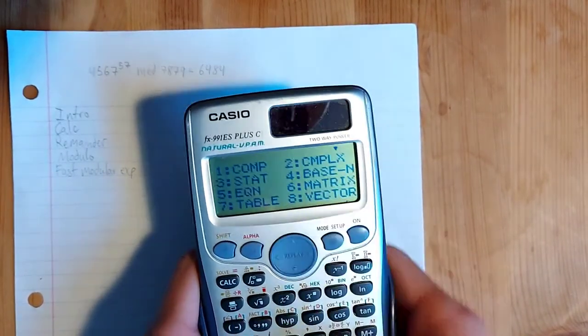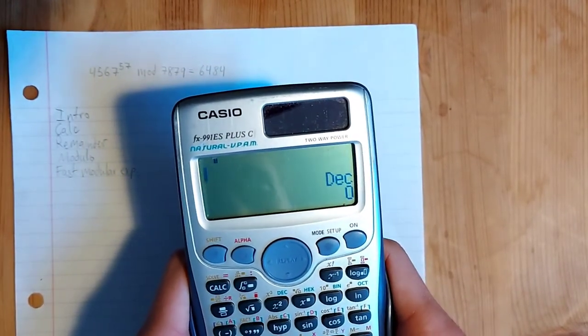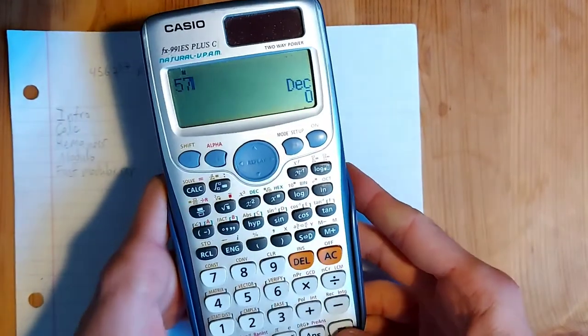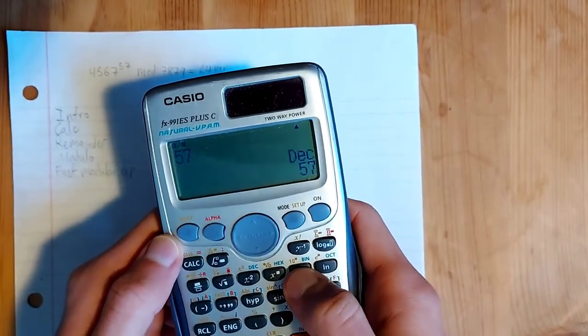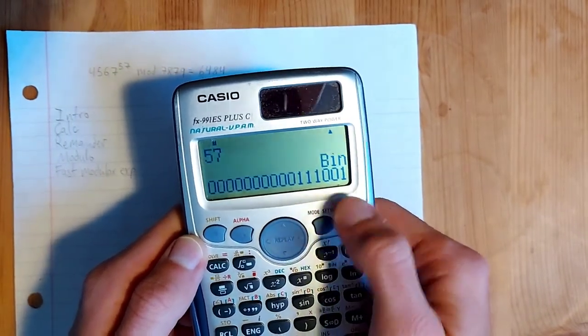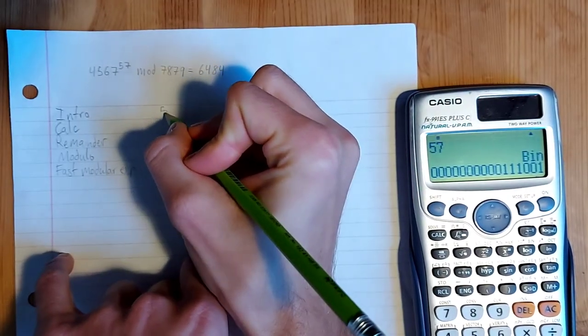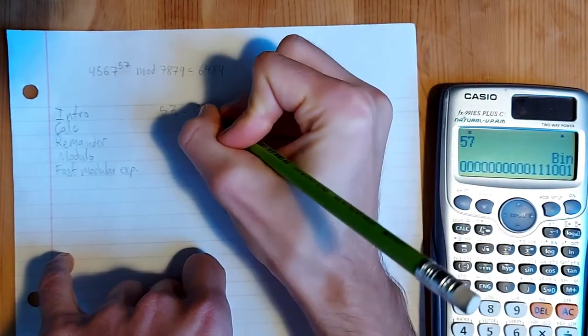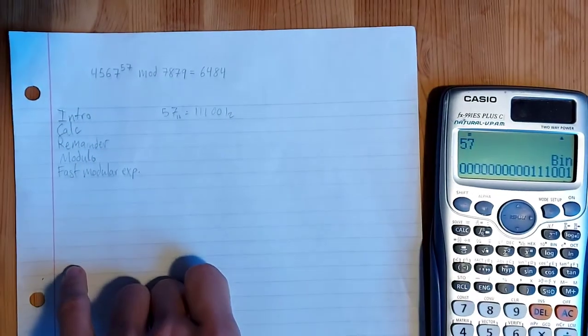And then we can go ahead and put in 57, hit equals and you'll see it shows up here. And then if you hit shift and press where it says binary here, so that's the log key, you'll see it will tell you it in binary. So we can now say that 57 base 10 is equal to 111001 base 2.